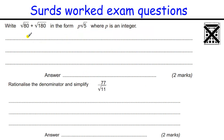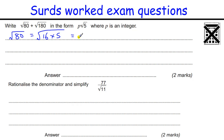Next one, same sort of thing. We want to get it in the form something times root 5 — that's our clue for what we need to factorise by. Looking at the square root of 80 in terms of something times 5: 5 goes into 80 sixteen times, and 16 just so happens to be a square number. So we've got the square root of 16 times the square root of 5, which is 4 root 5.